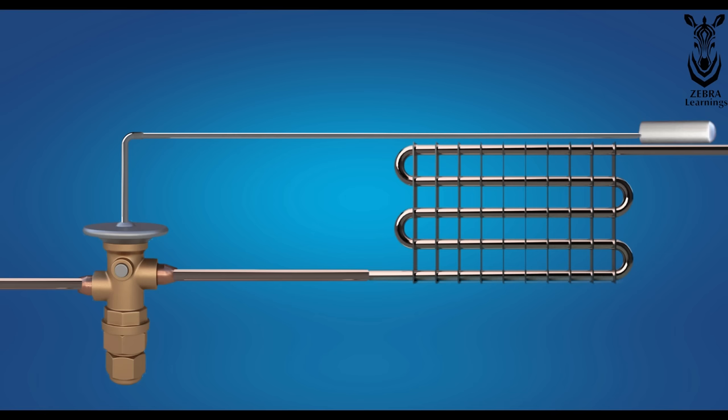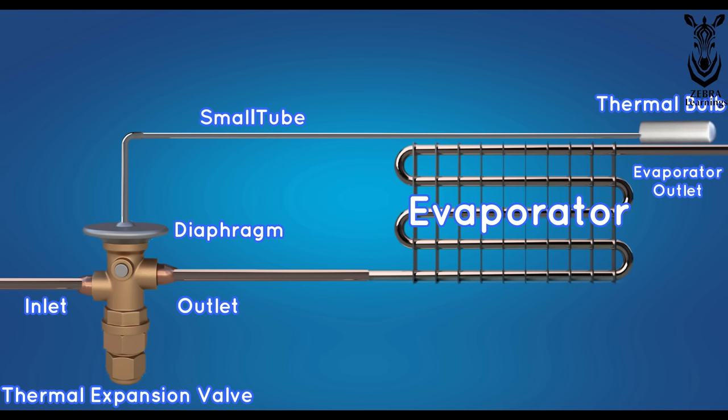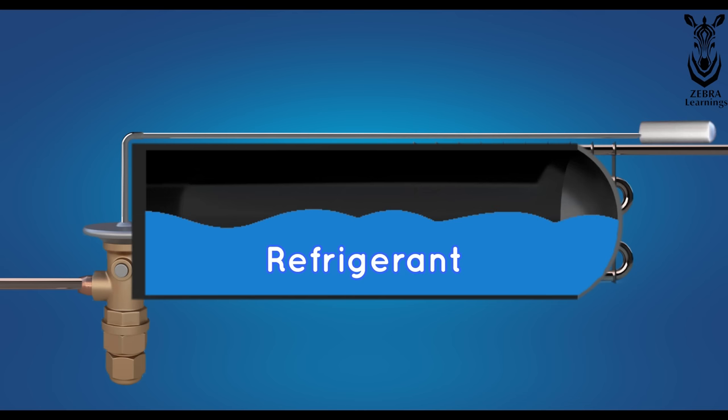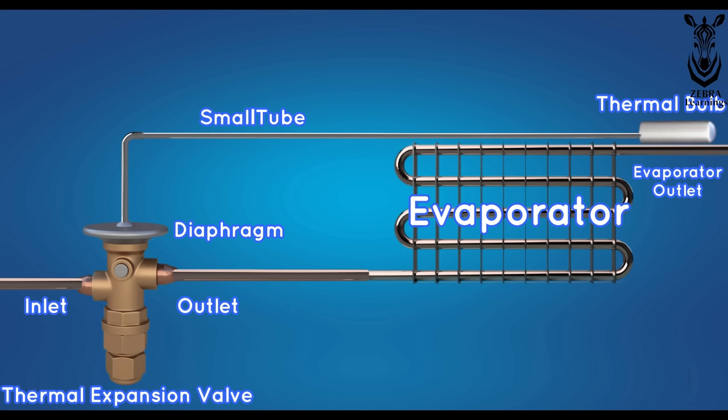The thermal bulb is connected to the outlet of the evaporator, like this. There is refrigerant inside this thermal bulb. The refrigerant used in the thermal bulb is the same refrigerant used in the AC unit. For example, if R410A refrigerant is used in the AC unit, the same refrigerant is used in the thermal bulb.